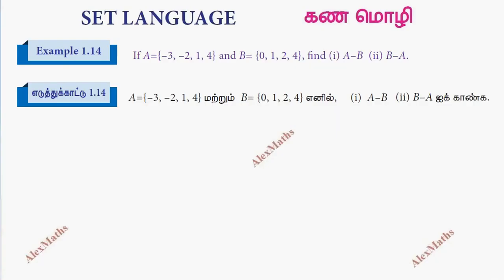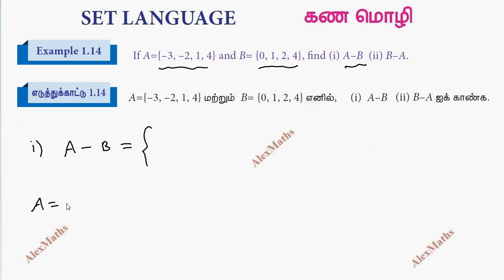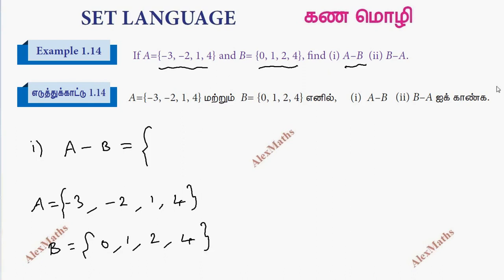Hi students, this is Alex here. Example 1.14, set A and B. First is A minus B. Set A: {-3, -2, 1, 4}. Set B: {0, 1, 2, 4}. A minus B gives us minus 3.